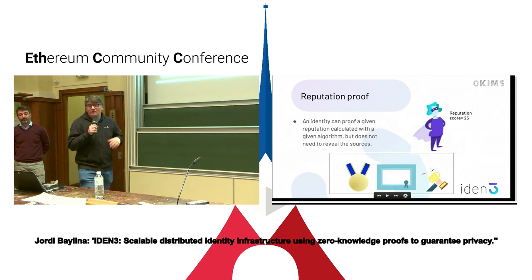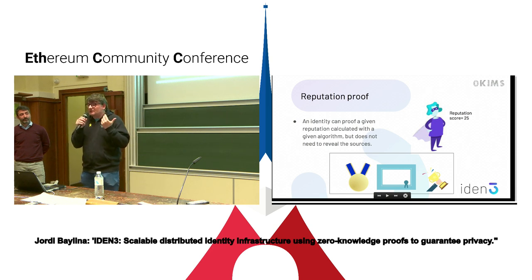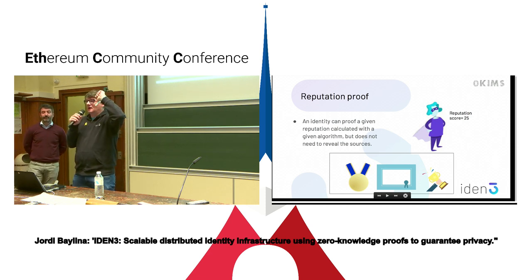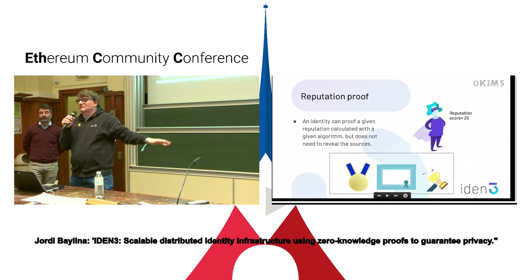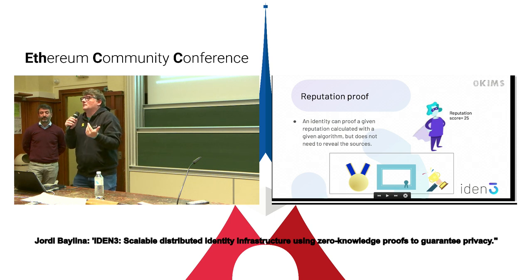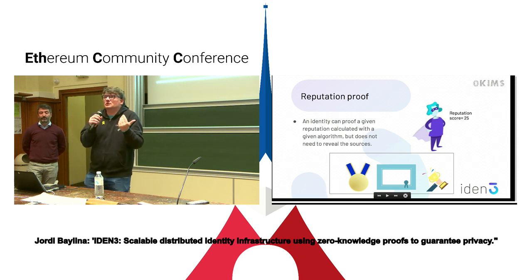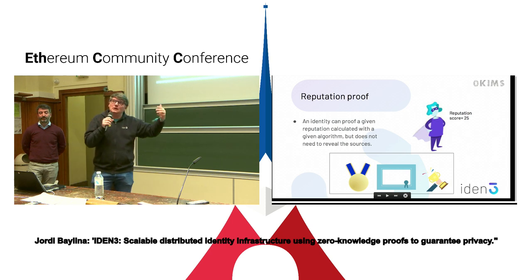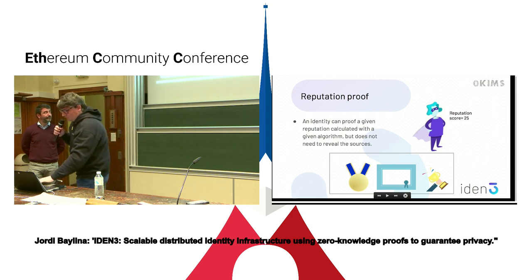Another use case is reputation proofs. Reputation is an algorithm that takes many claims — degrees, endorsements, likes from other people — computes them with some algorithm and produces a number. What you can do is prove that you hold a given score of a given reputation, but without revealing all the sources it comes from. This is another usage for zero knowledge.